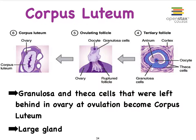The corpus luteum is formed primarily by the granulosa cells that stay behind and divide; the theca cells also contribute. As mentioned, the corpus luteum can get very big — in this picture of a whole ovary, you can see the corpus luteum takes up almost the entire space of the ovary. This wraps up our discussion on folliculogenesis.